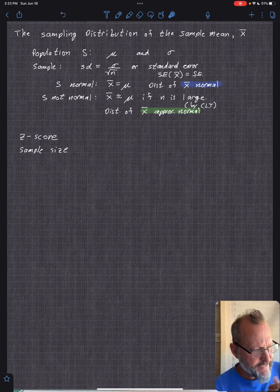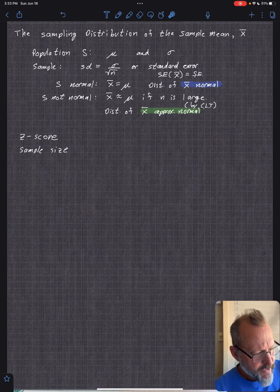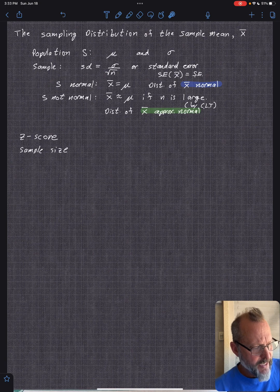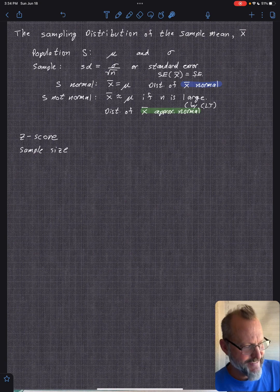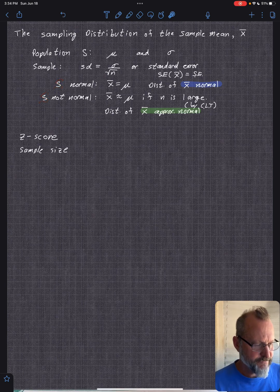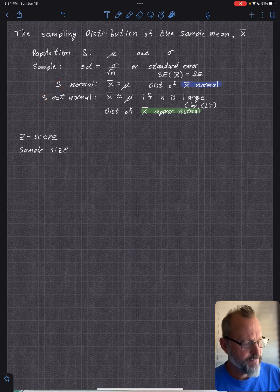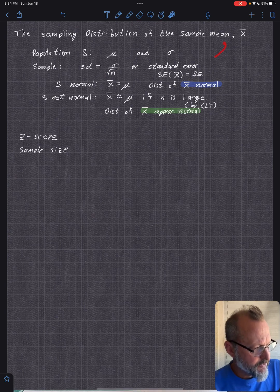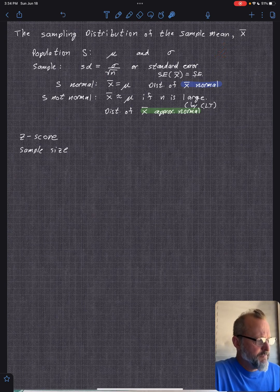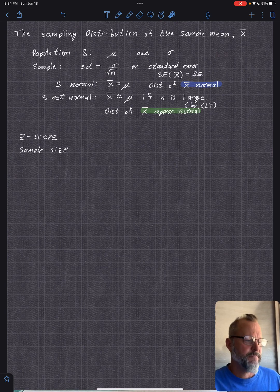Then we have two cases. Case one, if the population is normal, and case two, if the population is not normal or non-normal. And that's a capital S for universe or population. Sometimes they use a cursive S.